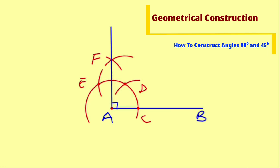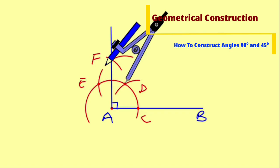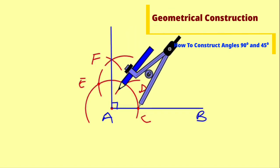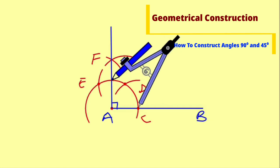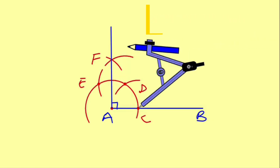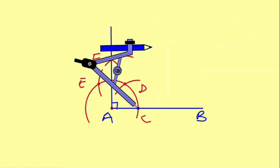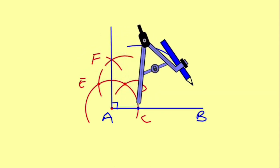Now let me show you how to construct angle 45 degrees. You can simply bring your compass and bisect this angle 90 degrees. Take the pointer to point C, extend the radius a little bit, and construct an arc just like this.